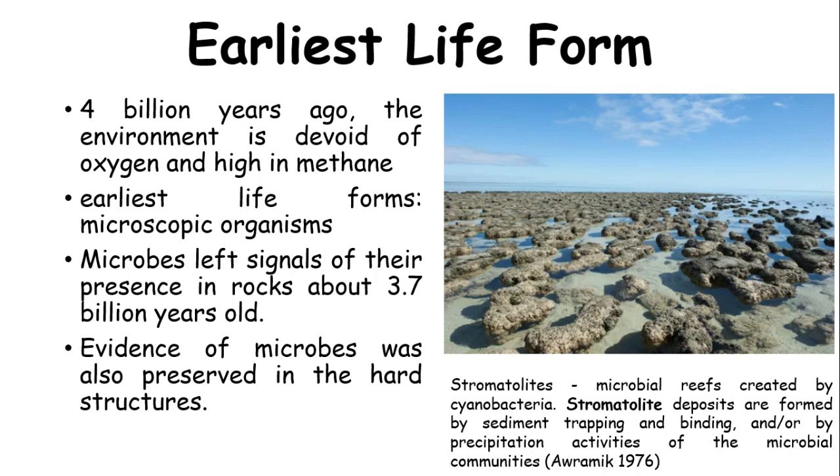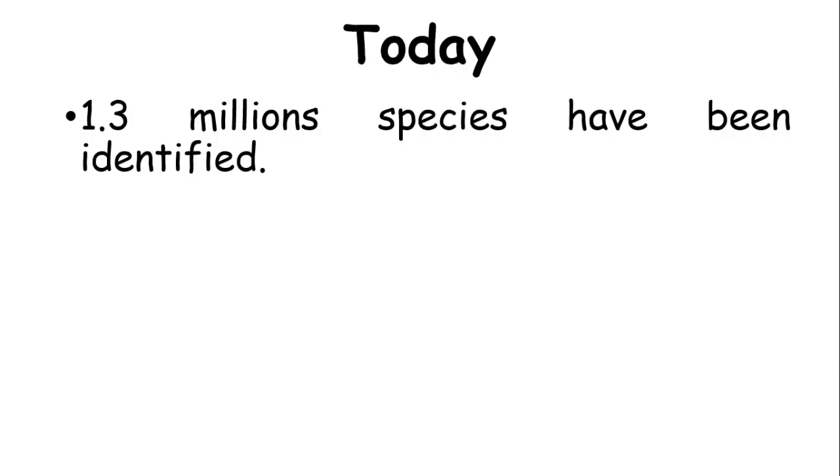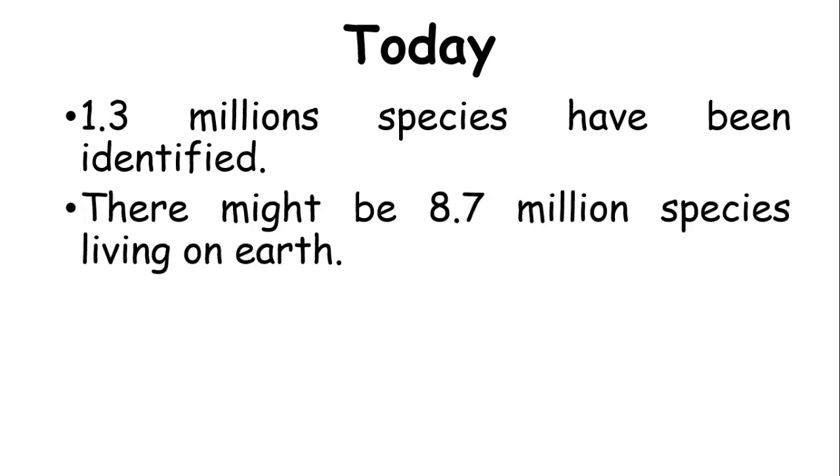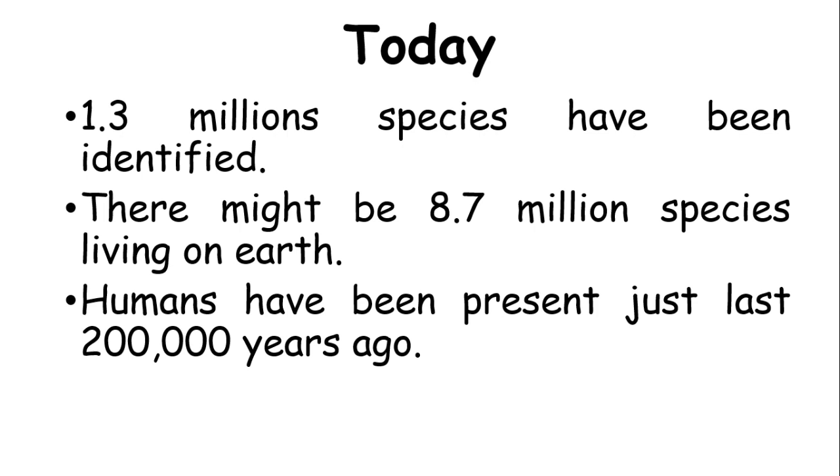Stromatolites are microbial reefs created by cyanobacteria, formerly known as blue-green algae. These are deposits formed by sediment trapping and binding. Today, 1.3 million species have been identified, but many more are still living unidentified. There might be 8.7 million species living on Earth. Humans have been present for just the last 200,000 years.